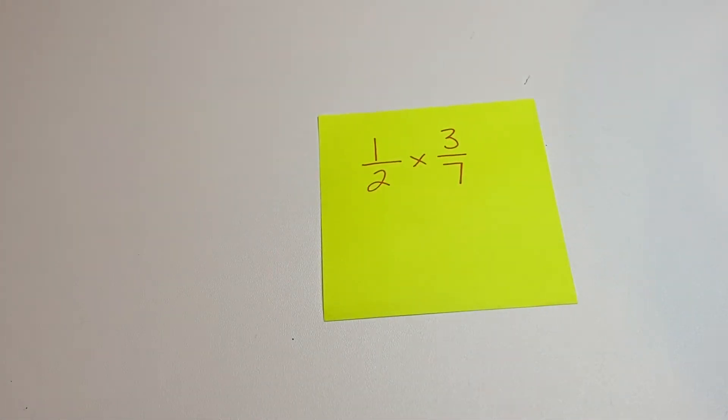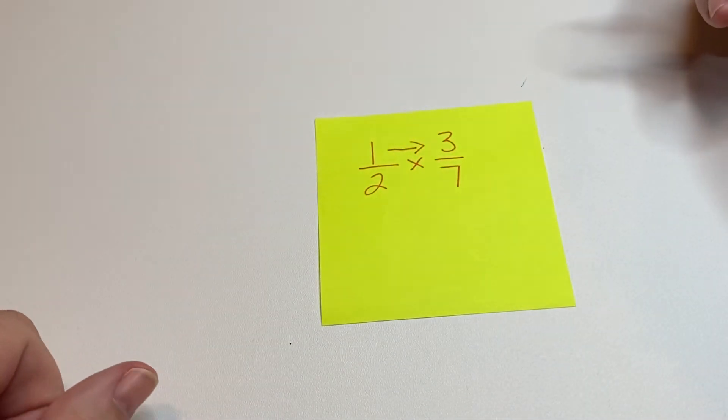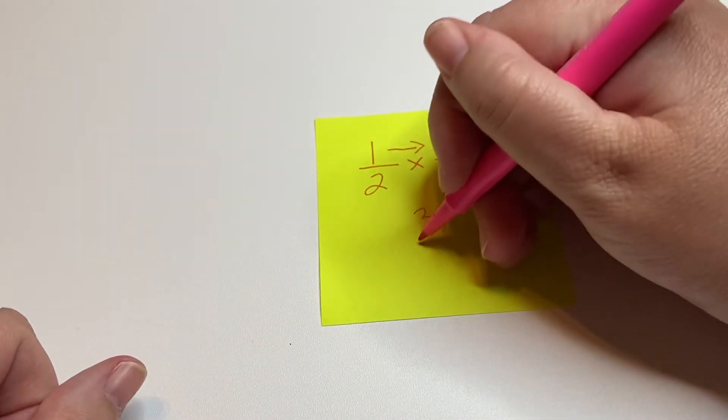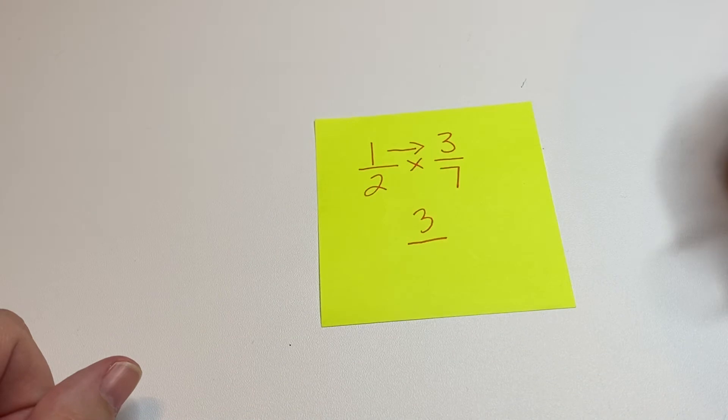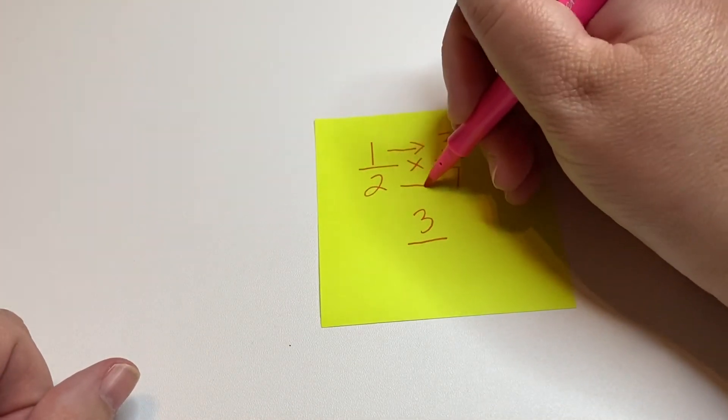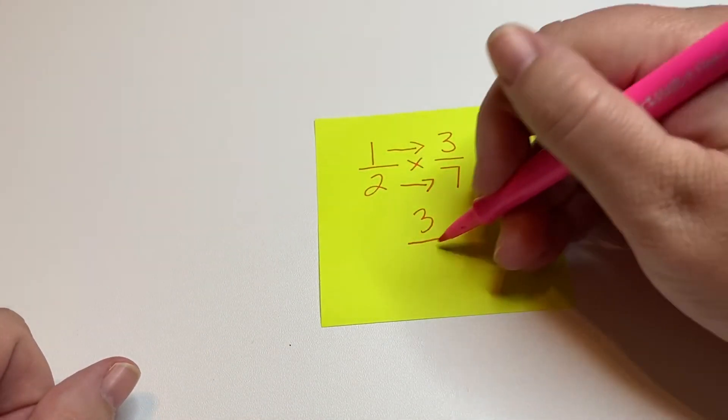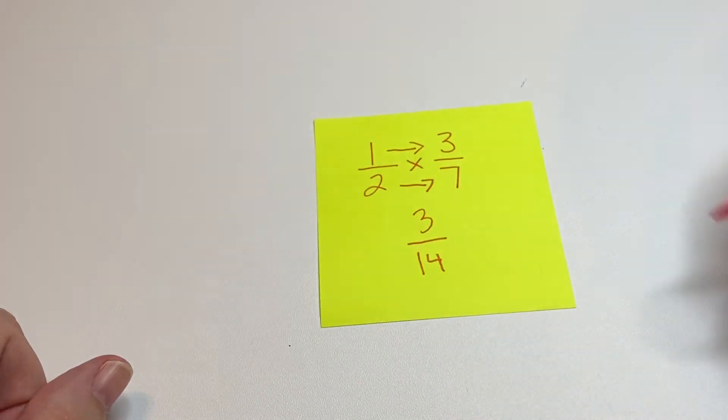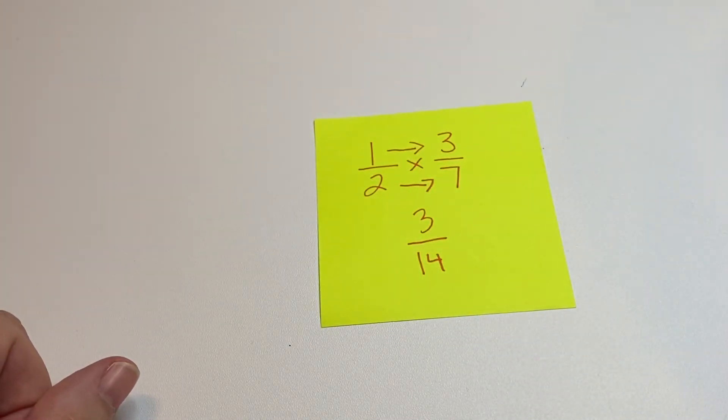So in this case, it's 1 times 3, which is 3. That'll be our new numerator. And 2 times 7, which is 14. So 1 half times 3 sevenths equals 3 fourteenths.